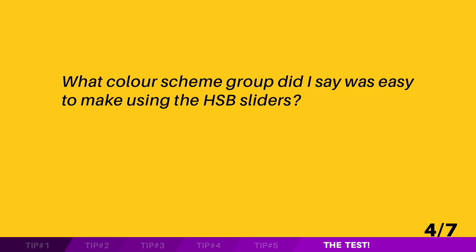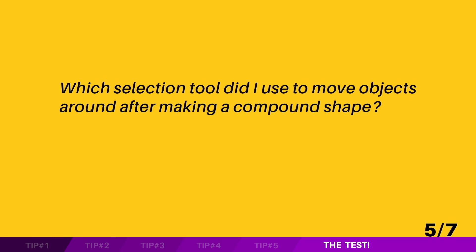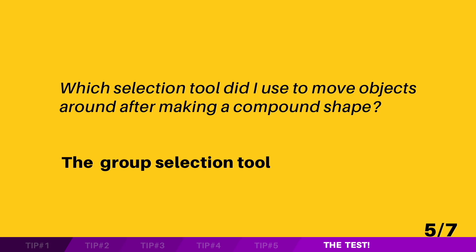What colour scheme did I say was easy to make using the HSB sliders? Monochrome is the correct answer, and it's a lot of fun making monochrome designs using those sliders. Which selection tool did I use to move objects around after making a compound shape? The answer was the group selection tool.